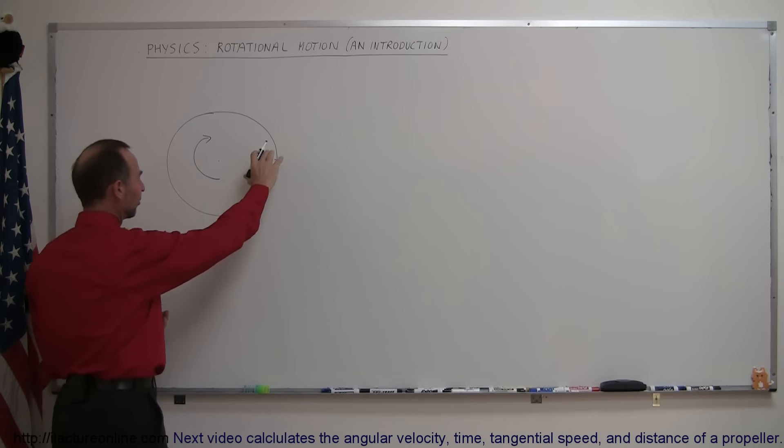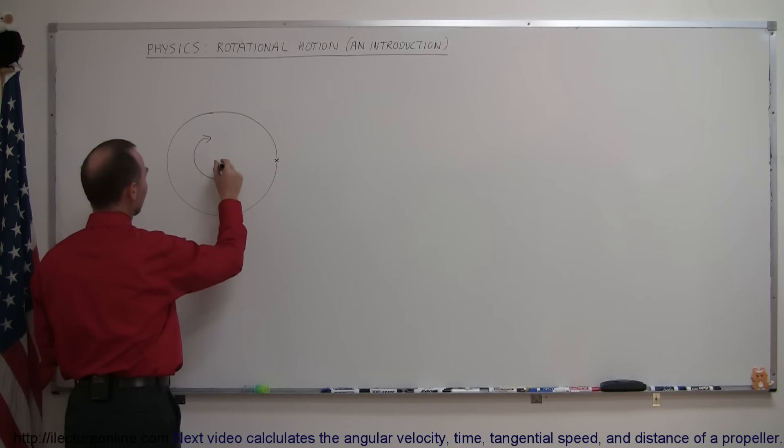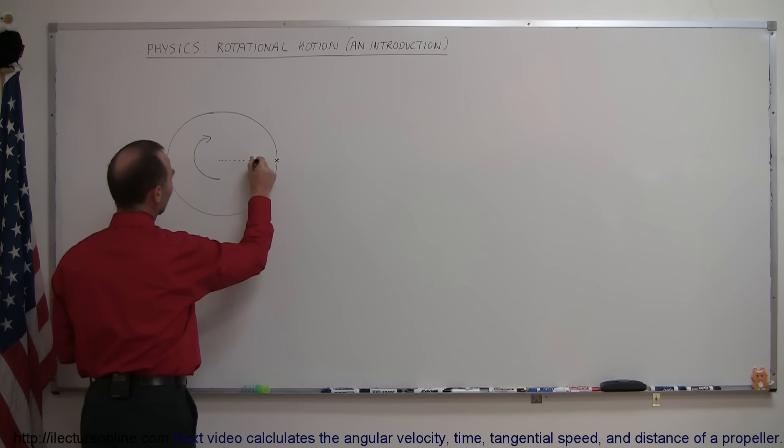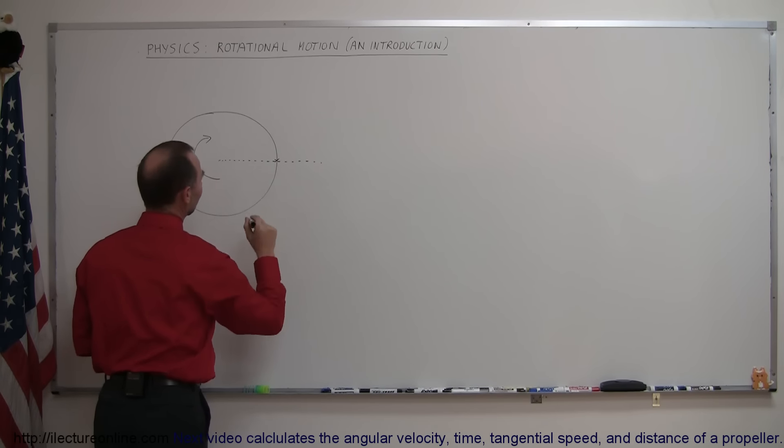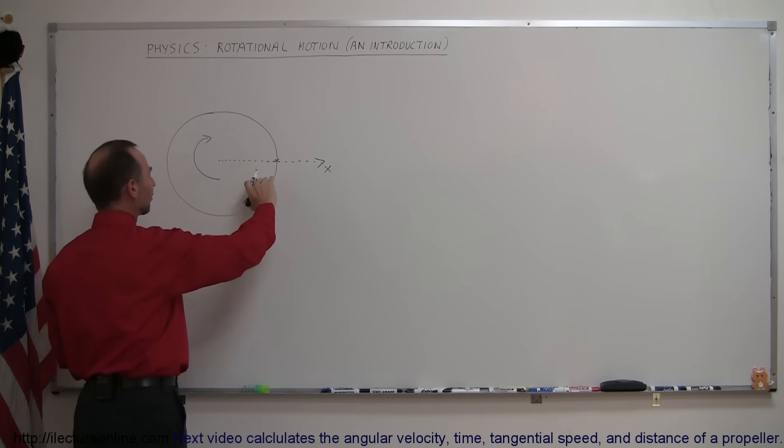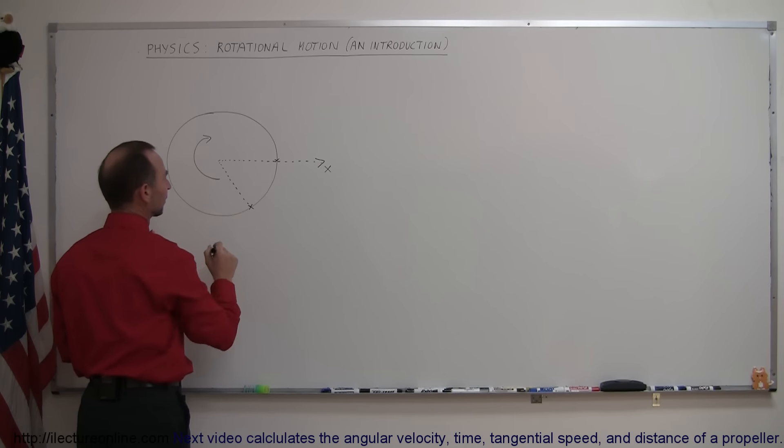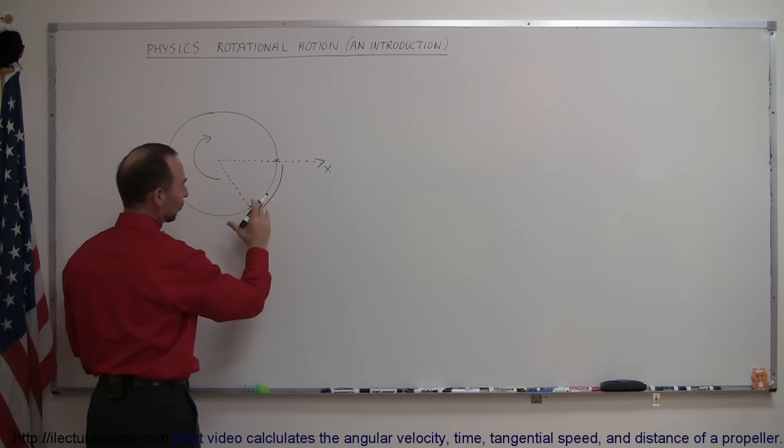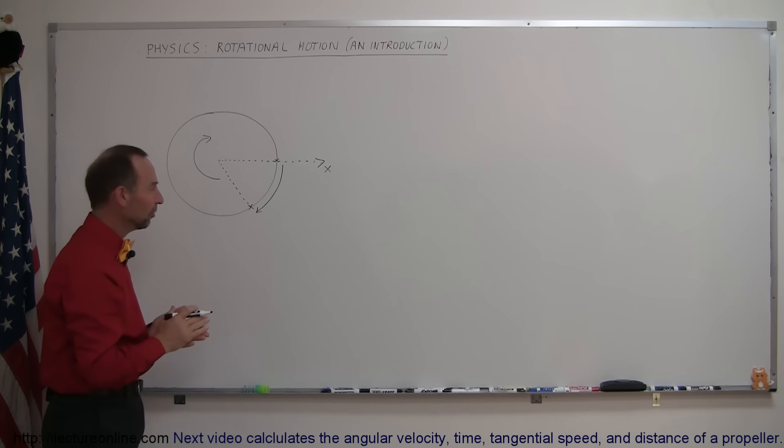And so you can imagine that this dot is now going to be rotating around, and if we use the horizontal x-axis as a reference, and this disc is rotating around in a clockwise direction, you can see that sometime later the dot will be in a different position. We'll have moved from there to there, and you can see that it has moved through a certain, what we call angular distance.